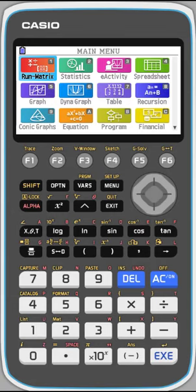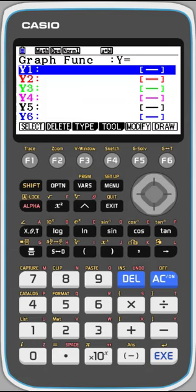So we're going to go into the graph menu. This is the main menu up here, and graph is number 5, or you can toggle to that menu icon and hit execute to enter. So we're going to first enter our function.